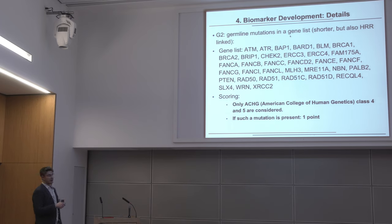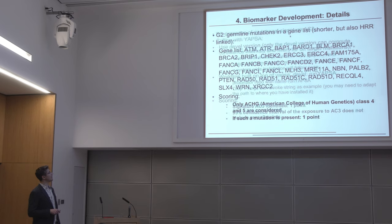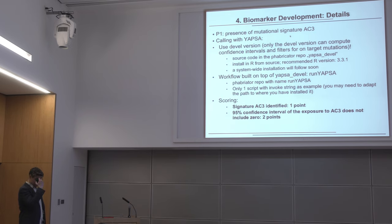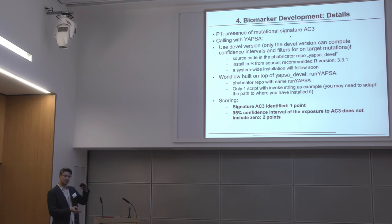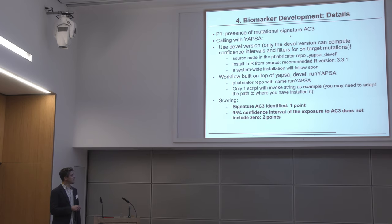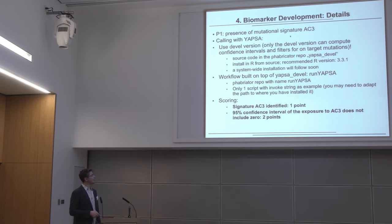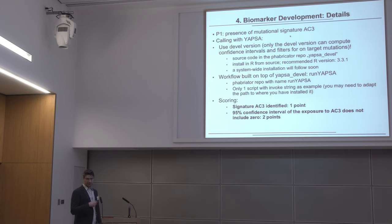For the phenotypic criteria — mutational signatures and genomic instability — we give either one or two points. Rather than basing points on the contribution magnitude of the signature, we use a confidence interval argument. YAPSA allows us to compute confidence intervals for the exposures. If the signature is absent, zero points; if present but zero is within the confidence interval, one point; if the confidence interval excludes zero, two points — we really believe in this call.